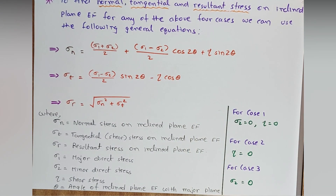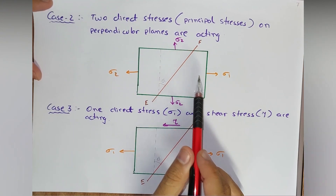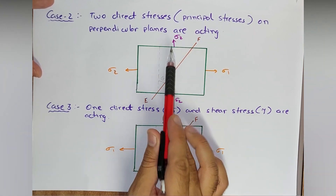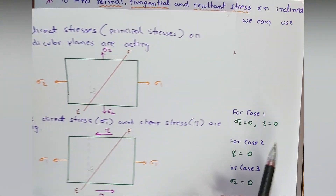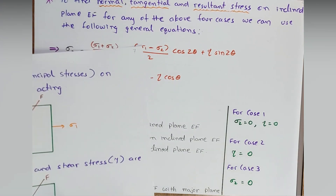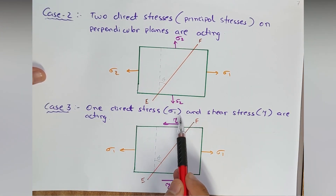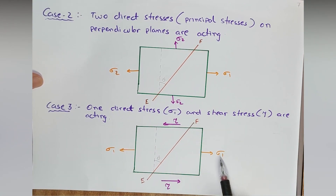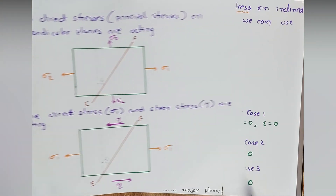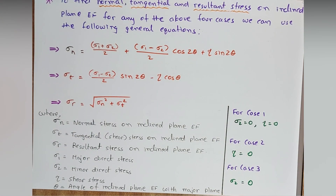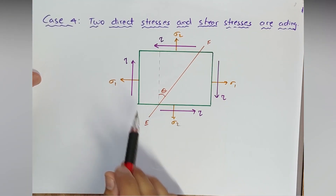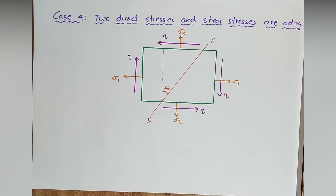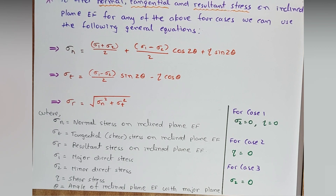For Case 2, sigma 1 and sigma 2 are both present but tau = 0 (no shear stress). For Case 3, sigma 1 and tau are present but sigma 2 = 0. For Case 4, all three — sigma 1, sigma 2, and tau — are present, so nothing is zero.